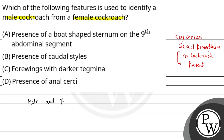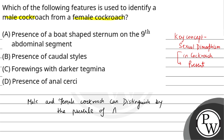Male and female cockroach can be distinguished by the presence of anal cerci in male. Male ke andar anal cerci ya jisko caudal style kehte hain, ye present hote hain male mein. Aur female cockroach mein ye absent hote hain.